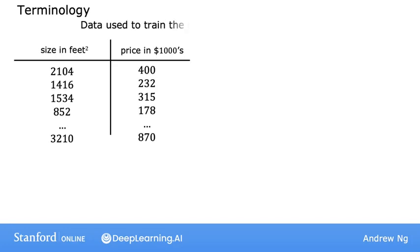The dataset that you just saw and that is used to train the model is called a training set. Your client's house is not in this dataset because it's not yet sold. So you first train your model to learn from the training set, and that model can then predict your client's house's price.